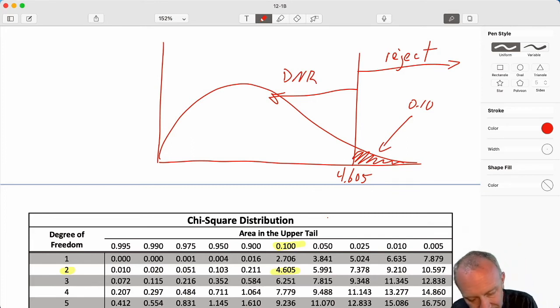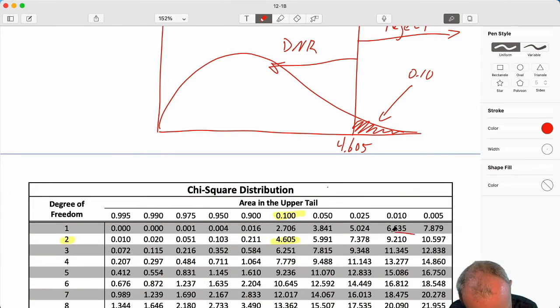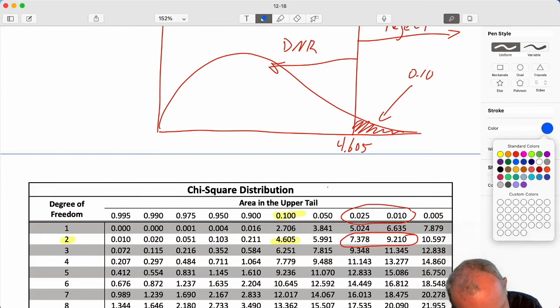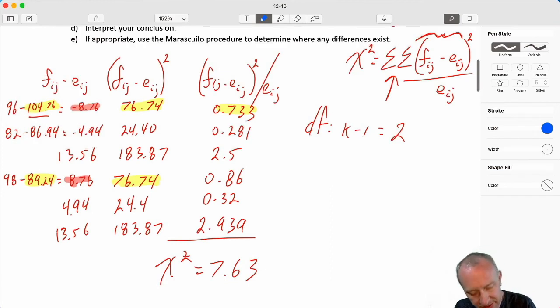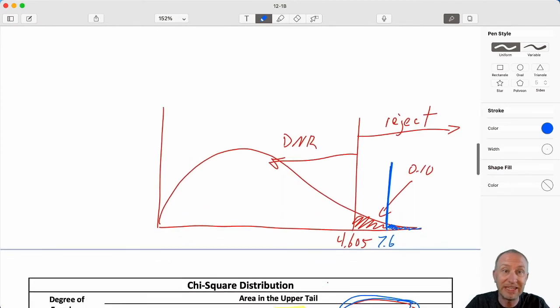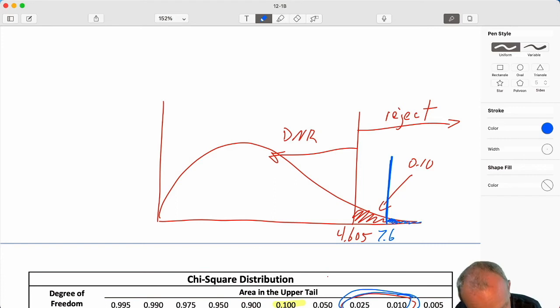Our test statistic here was 7.633. So we're kind of in between these two values. Our test statistic was up here somewhere. That's 7.633. So what does that tell us? Our p-value, the area in the upper tail is between 0.025 and 0.01. So coming back up here, our p-value is less than 0.025, greater than 0.01. And certainly looking at that critical value approach, it's also larger than that critical value. And that corresponds with an area of 0.1. So it comes as no surprise that our p-value is also less than that significance level.